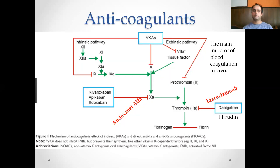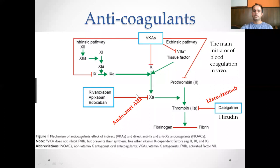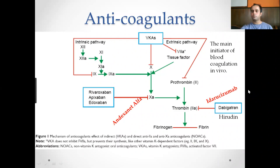The main problem with anticoagulants is bleeding. If there is an emergency need to stop bleeding, reversal agents are required. For warfarin, which is a vitamin K antagonist, the reversal agent is vitamin K. For rivaroxaban, apixaban, and edoxaban, andexanet alfa discovered in 2018 can be used. For dabigatran, a direct thrombin inhibitor, the reversal agent is idarucizumab, which was FDA approved in 2015.